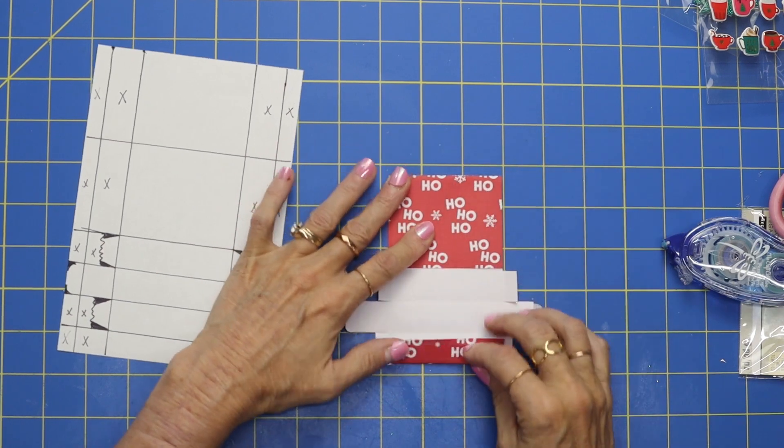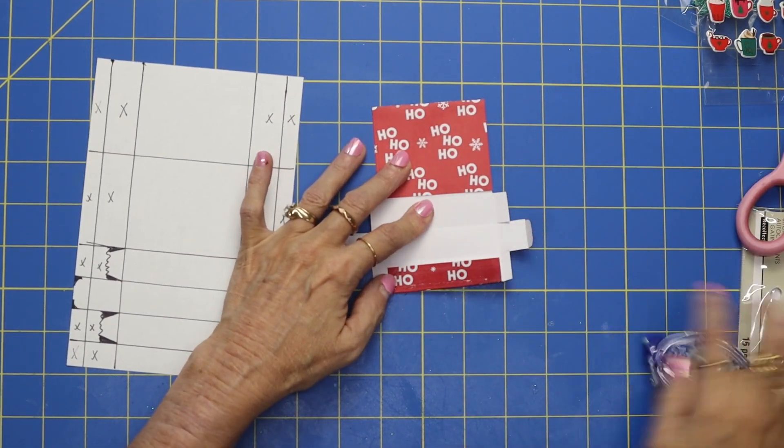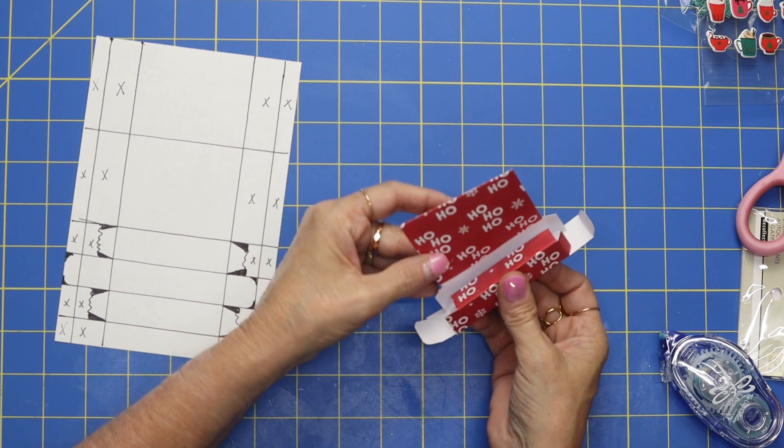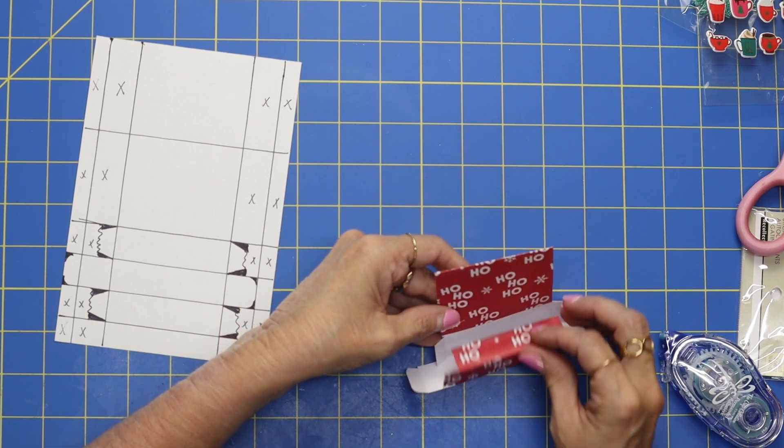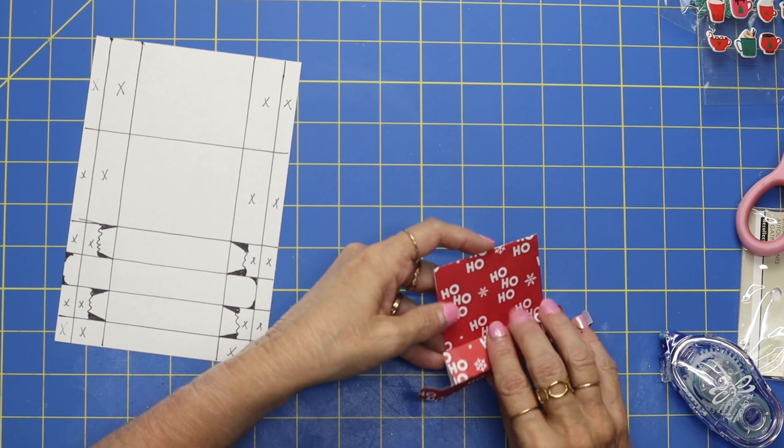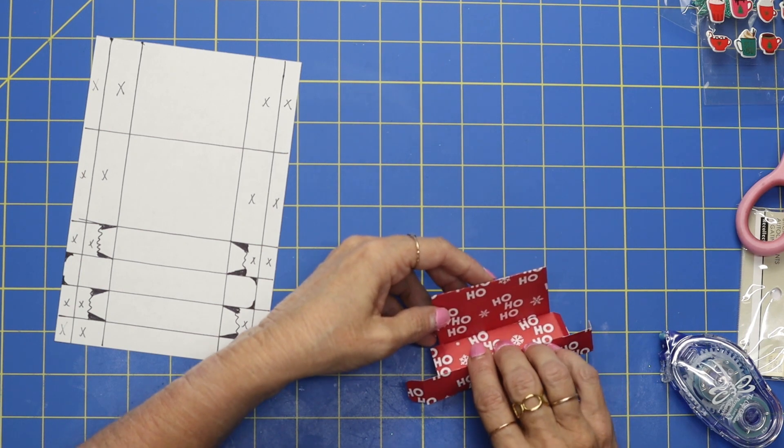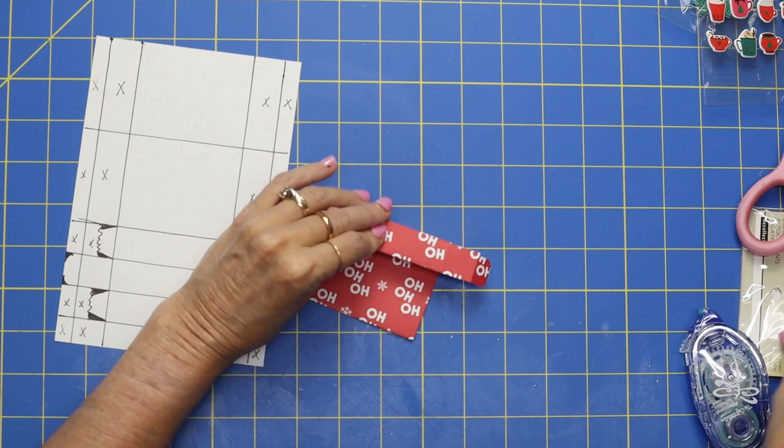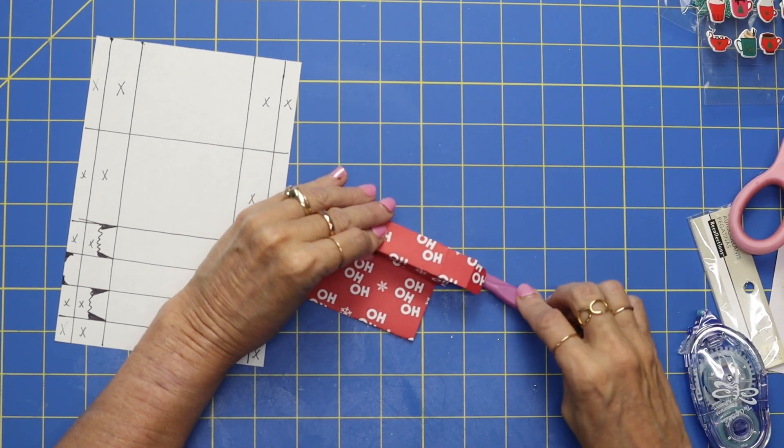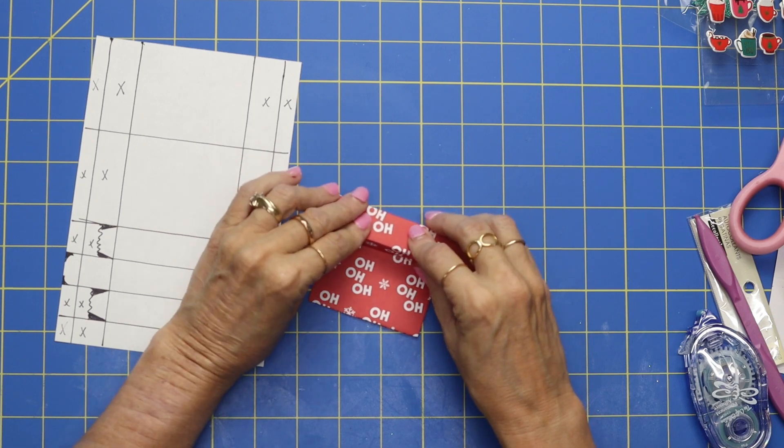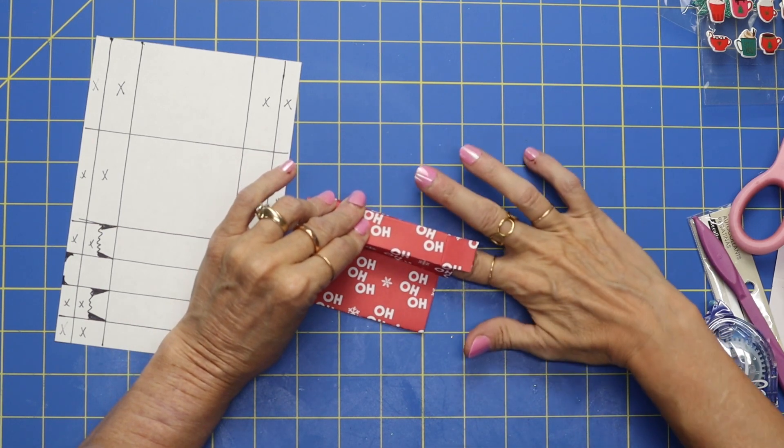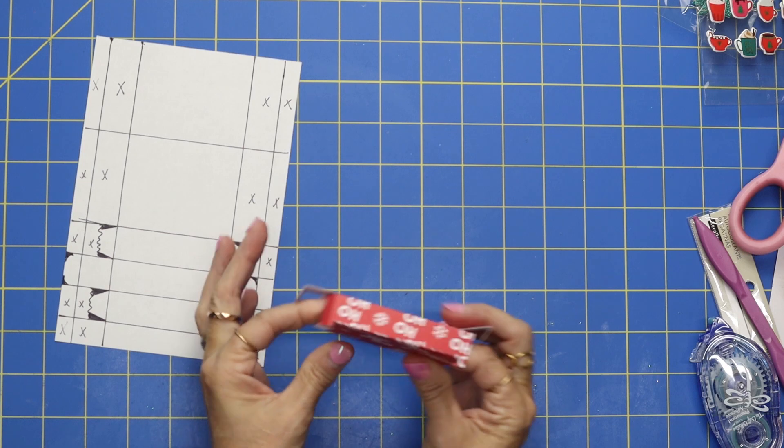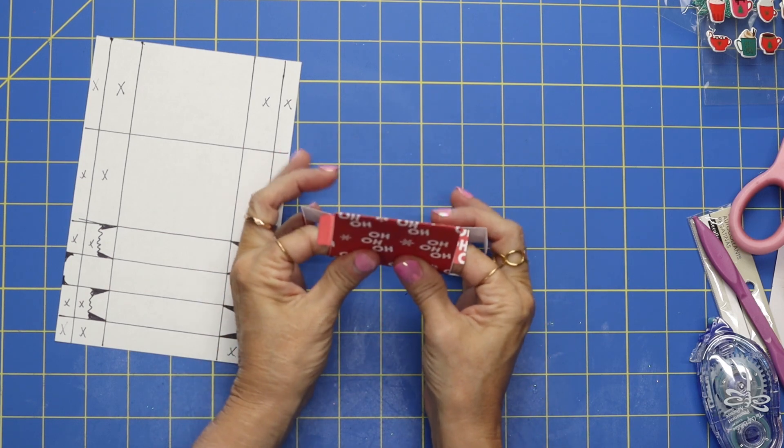Now watch how this comes together. So we've got some adhesive onto this little tab right here and this is just going to fold over. We're going to line up that tab just with the edge of that box and then fold it over. I'm going to take my bone folder and just kind of push it down in there. Just going to grab my fingers and just kind of push in there.